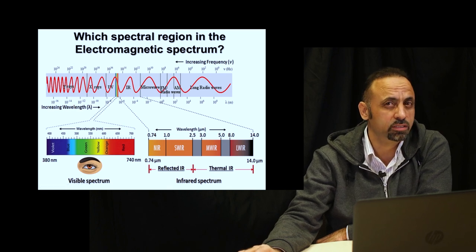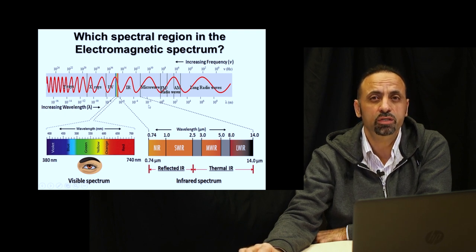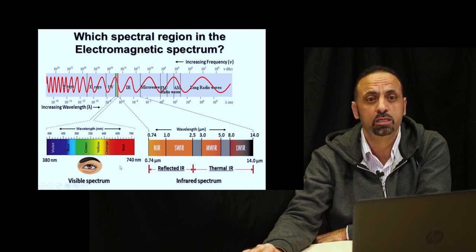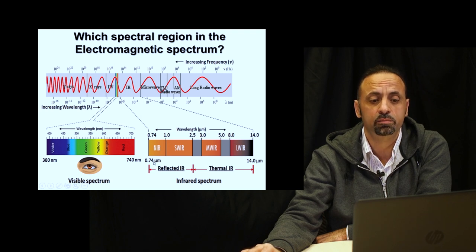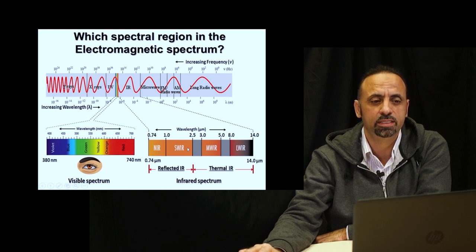Which spectral region of the electromagnetic spectrum are we interested in? The electromagnetic spectrum extends from gamma rays to long radio waves. For food and agricultural products, there are two key regions. The visible region extends from 380 nanometers to 740 nanometers. Near infrared extends from 740 to 14,000 nanometers, but we concentrate on a shorter range from 740 nanometers to only 2,500 nanometers. This is called the near infrared region of the electromagnetic spectrum.